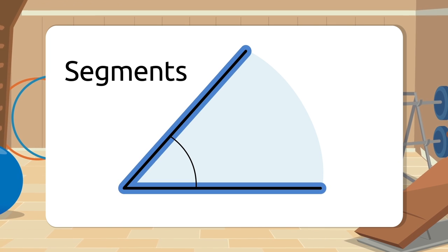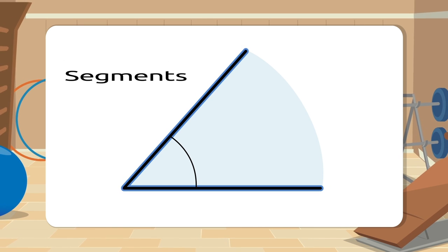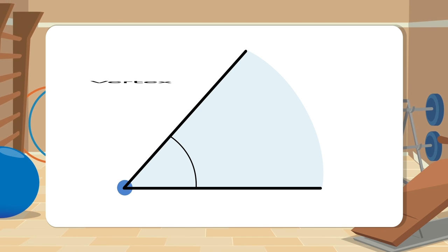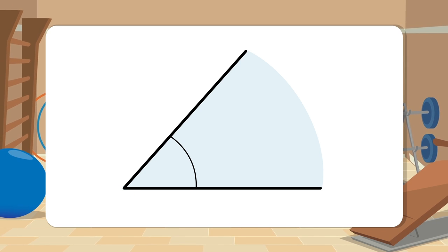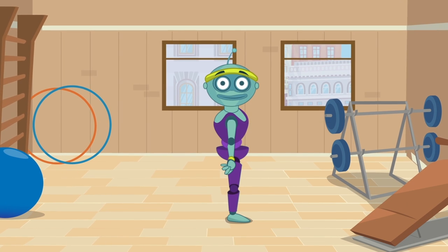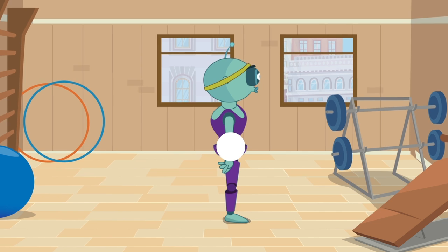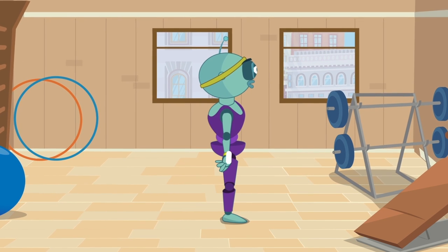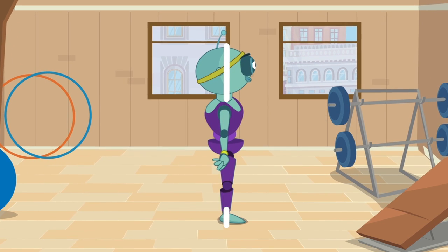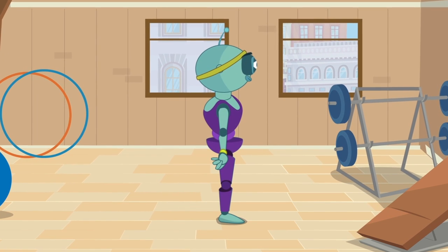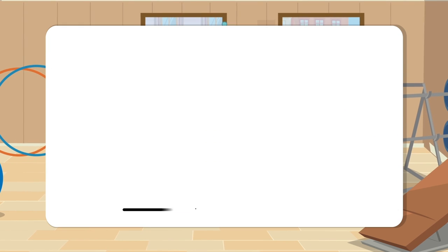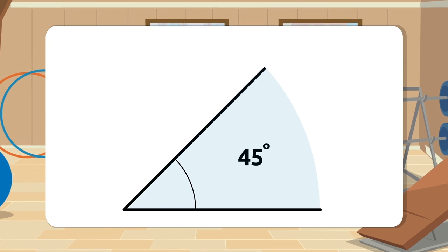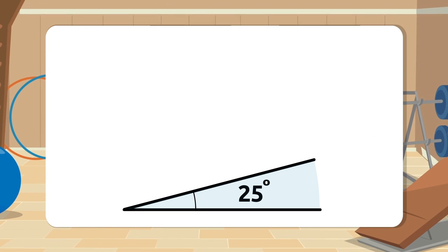The straight lines of an angle are called segments and the point where both lines meet is called the vertex. In my body the vertex would be my hips, and the segments the upper and lower parts of my body. We measure angles in degrees — degrees indicate how open each angle is.